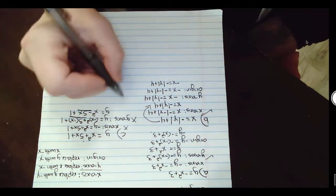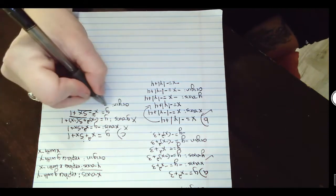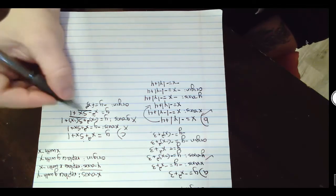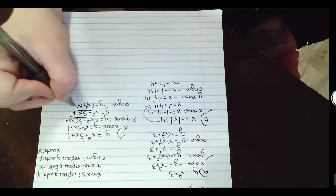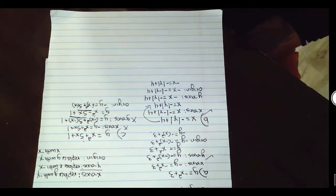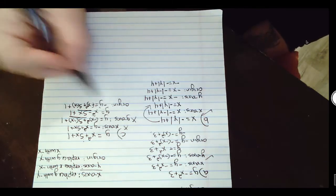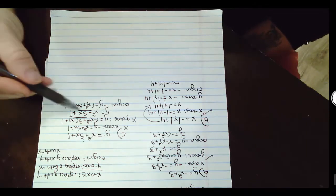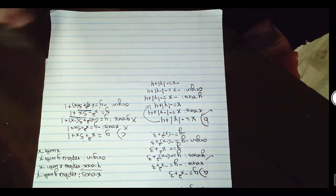Since y-axis symmetry doesn't work, origin is not going to work either. When we plug in negative x for x and negative y for y, the negative y on the left doesn't match the original, and the -5x is not the same as the original +5x. So for example C, none of these symmetries work — it's a neither case.